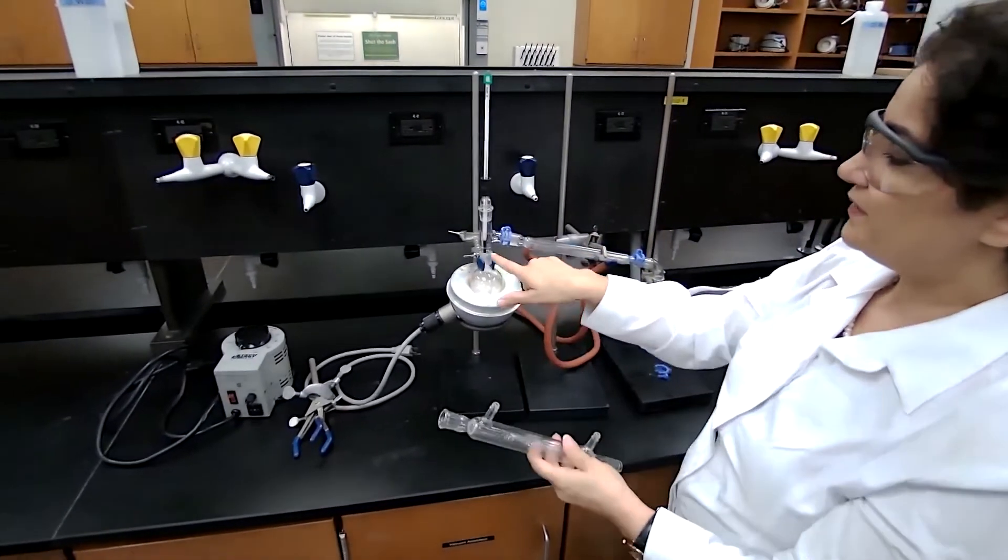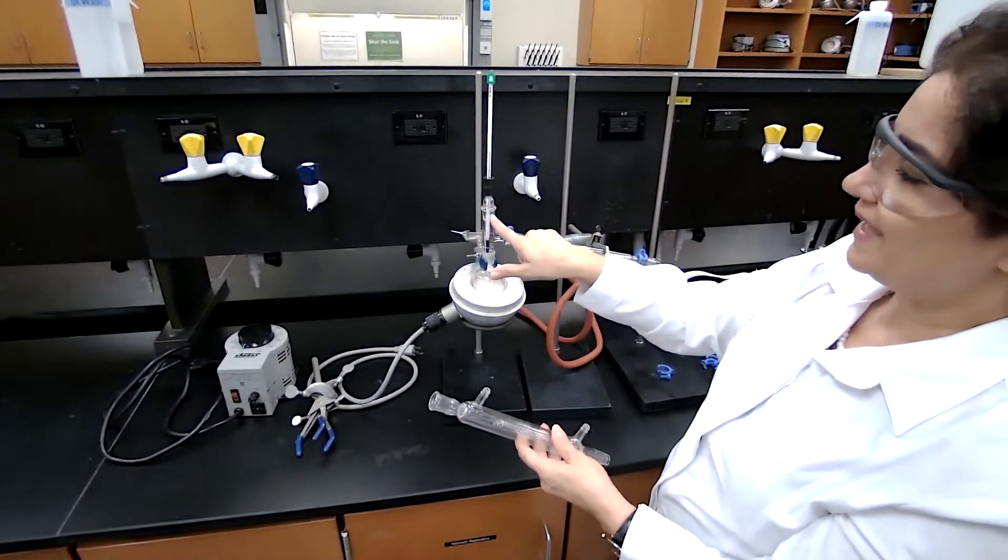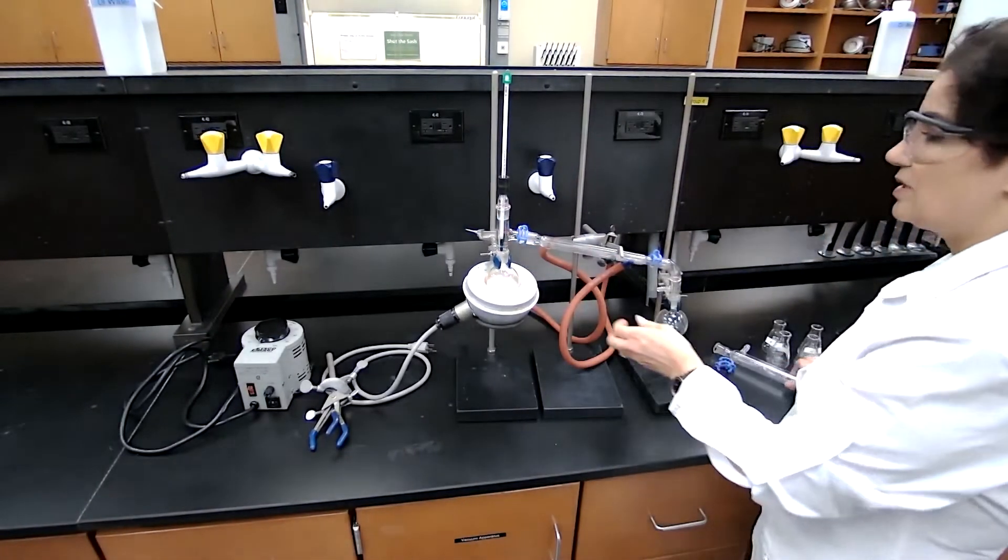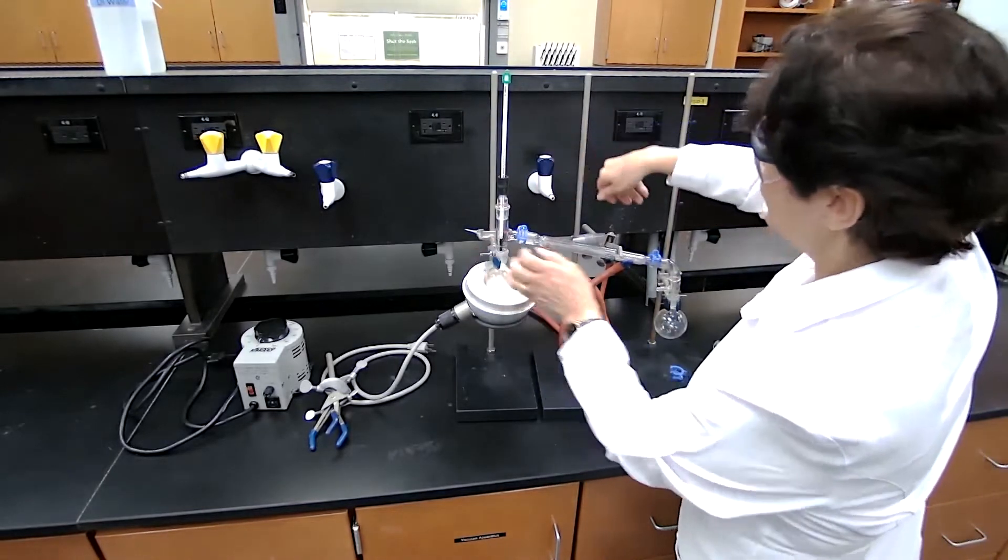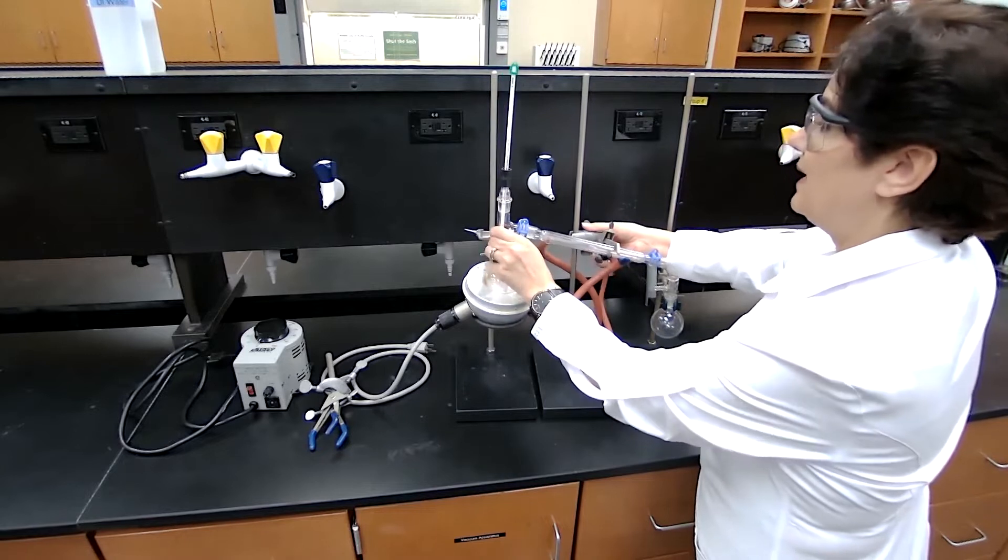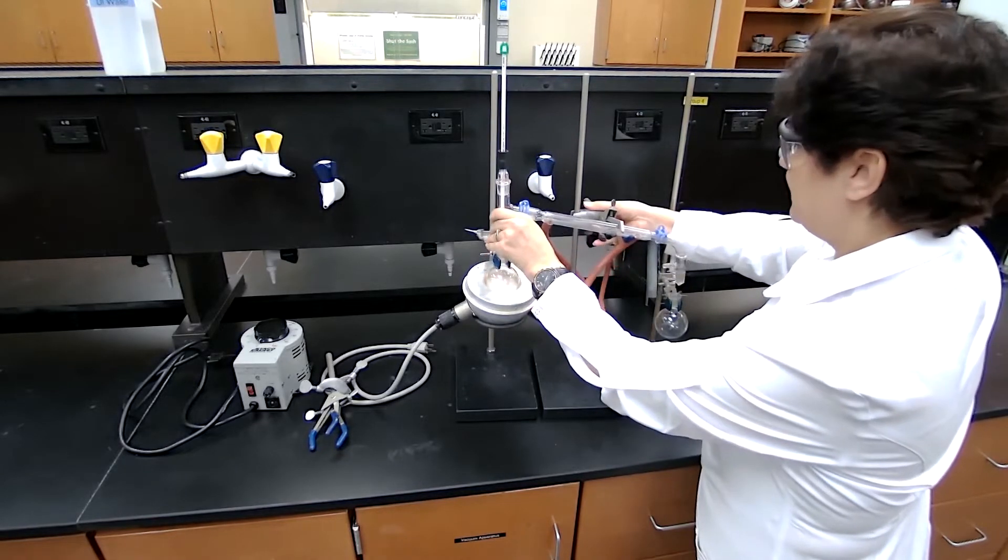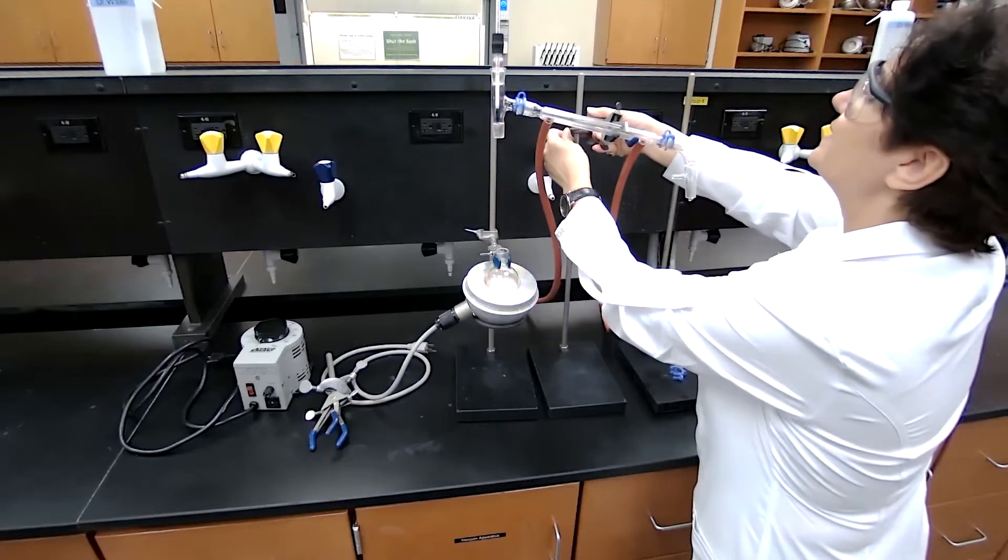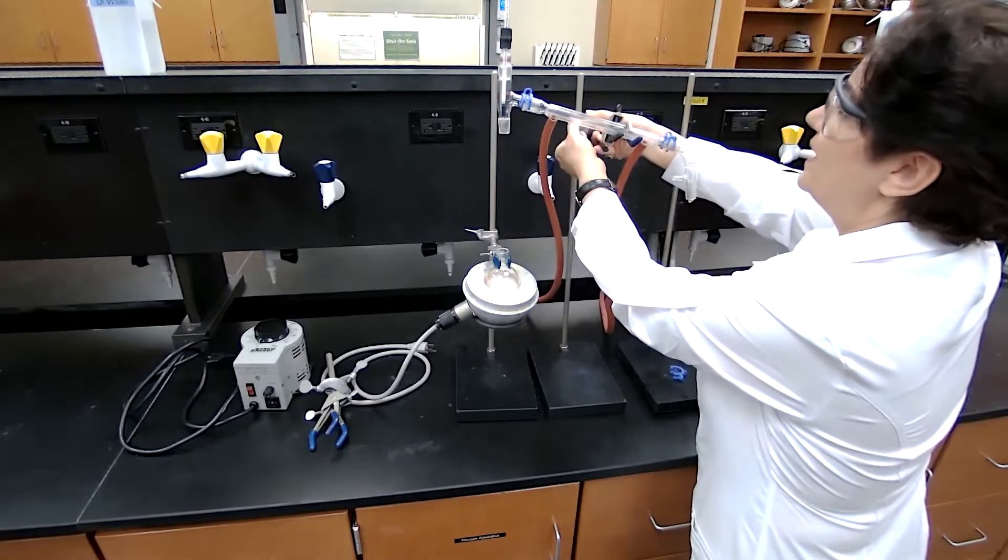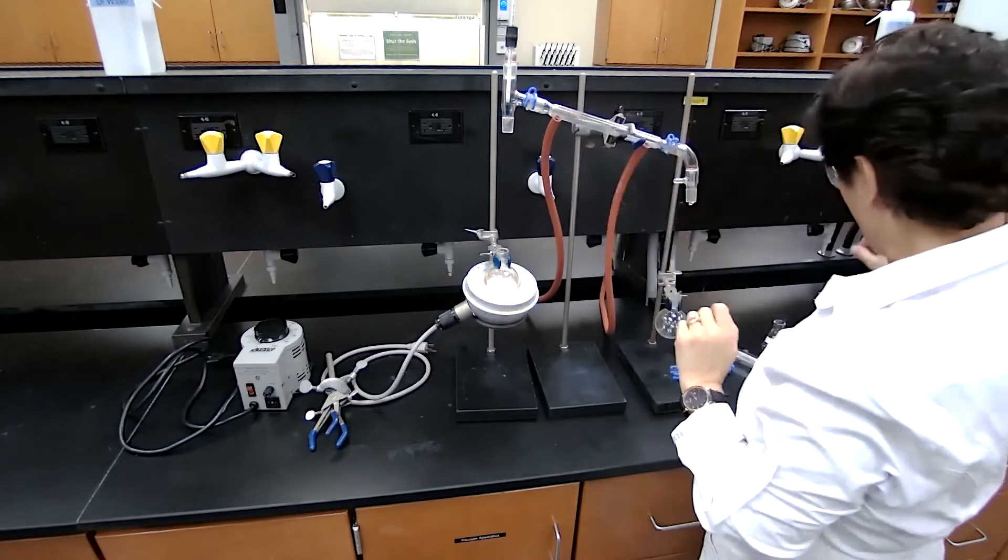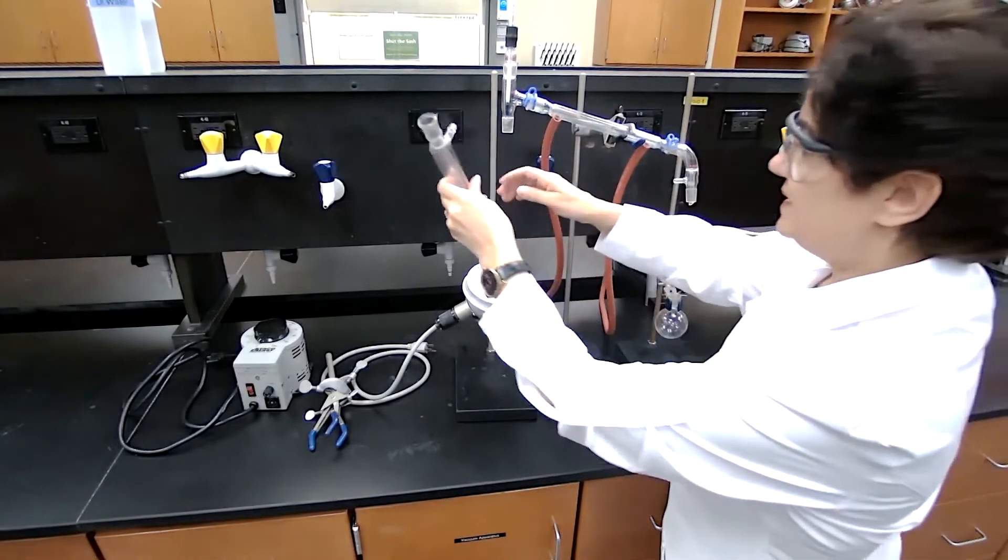To do that I need to increase the height for everything else. I will keep the boiling flask at the same height that I have. I'm just going to make the distillation head higher.